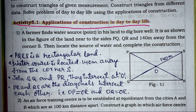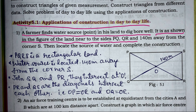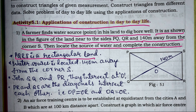First problem: a farmer finds a water source in his land to dig the bore well, as shown in the figure. The land is near the sites PQ, QR, and 140 meters away from the corner S. We need to locate the source of water and complete the construction. Here, PQRS is a rectangular land. The water source is located 140 meters away from corner S.